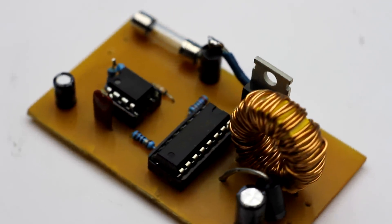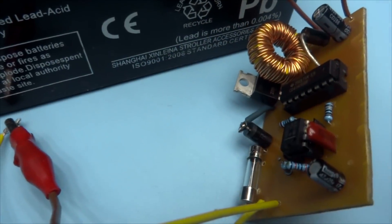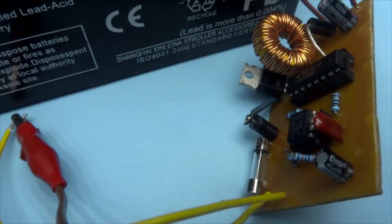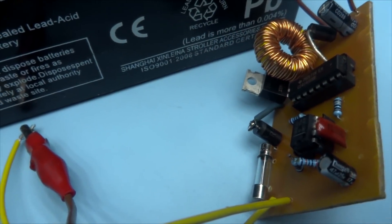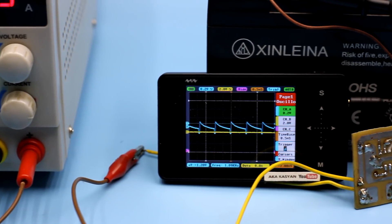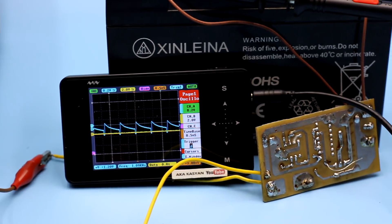Since the device works in the audio range, you are likely to hear a weak whistle. The power components of the circuit should be slightly heated. With the oscilloscope, you can verify that the battery is charged with high-frequency current pulses.